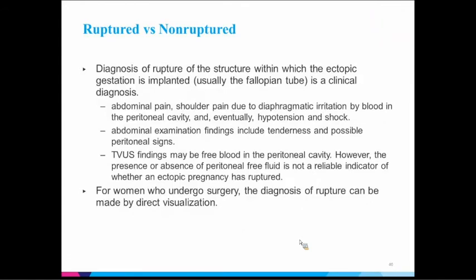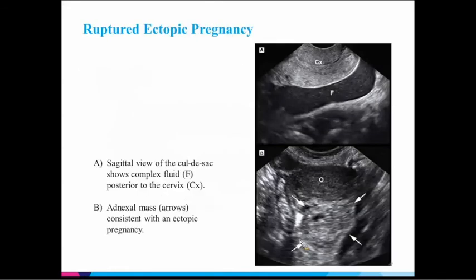Regarding rupture: the ectopic where it's implanted — usually the fallopian tube — will show signs of rupture in that area. They may have fluid in the peritoneal cavity, generally in the cul-de-sac, and with significant bleeding you may see it near the liver. They can have abdominal pain, referred shoulder pain if blood is irritating the diaphragm, and eventually hypotension and shock if untreated. On exam they may have peritoneal signs — guarding or rigidity — suggesting a surgical abdomen. On ultrasound you'll see fluid in the cul-de-sac that looks like blood clots rather than clear fluid.